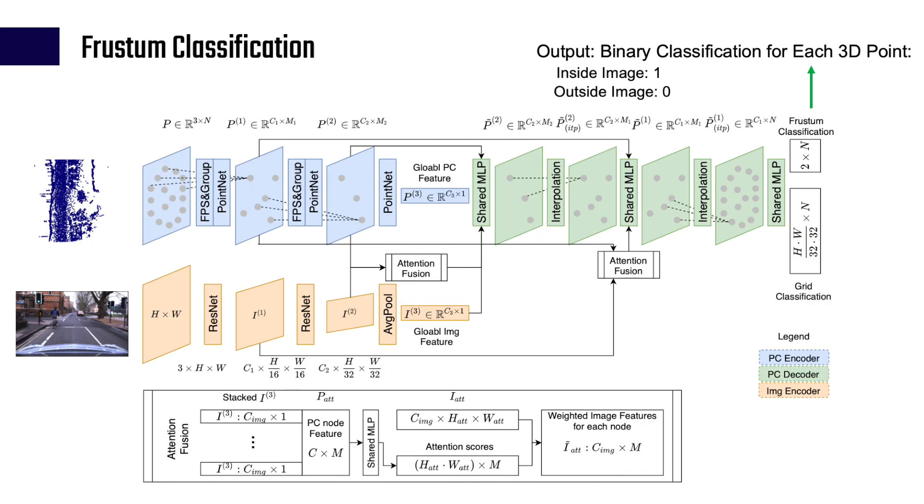The Frustum classification is a typical per-point semantic segmentation problem. The inputs are a point cloud and an image. The output is binary classification for each 3D point in the point cloud. Label 1 means that particular 3D point falls inside the image plane. Label 0 means that point falls outside the image plane.